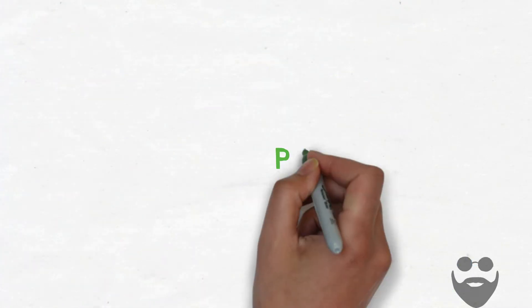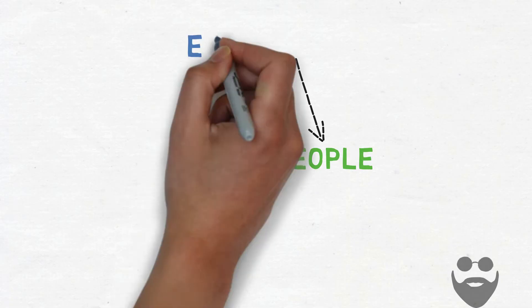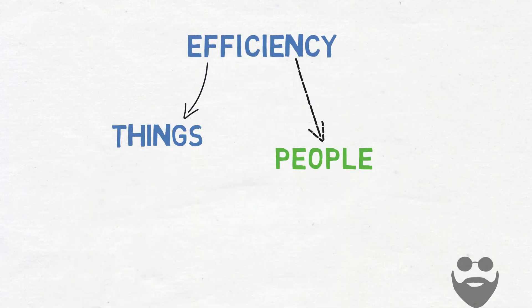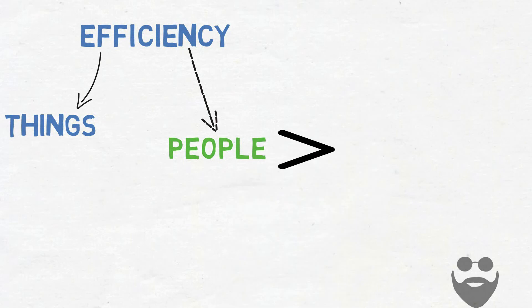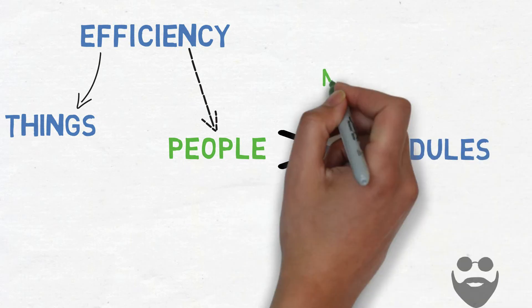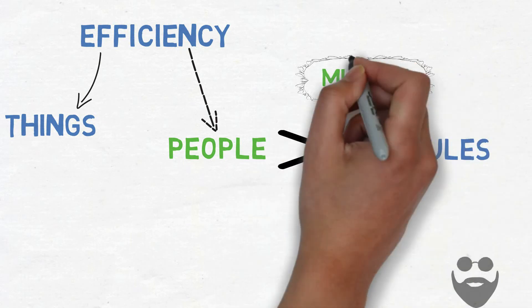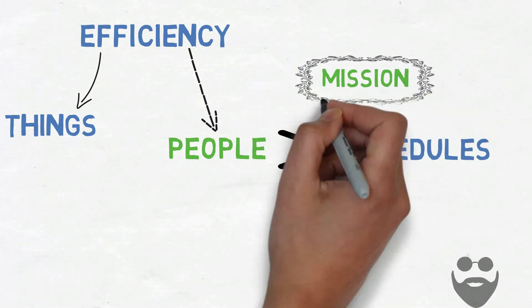And never think about people in terms of efficiency. Rather, manage things for efficiency. People are more important than schedules. A schedule is not important in itself. What is more important is your mission as a whole.